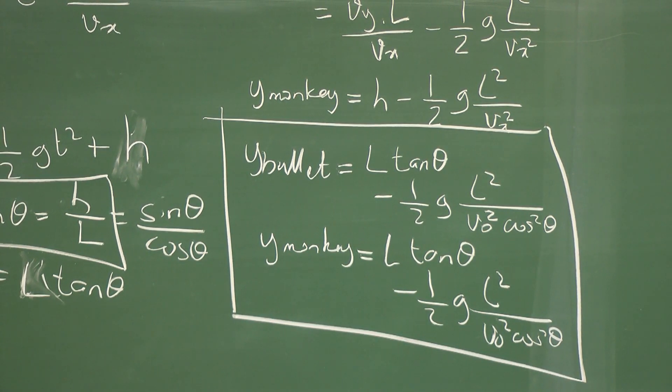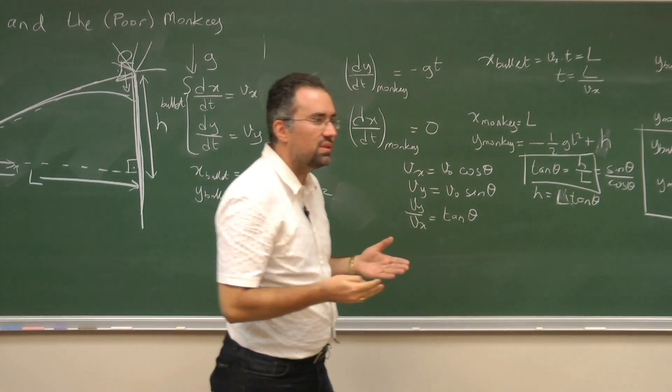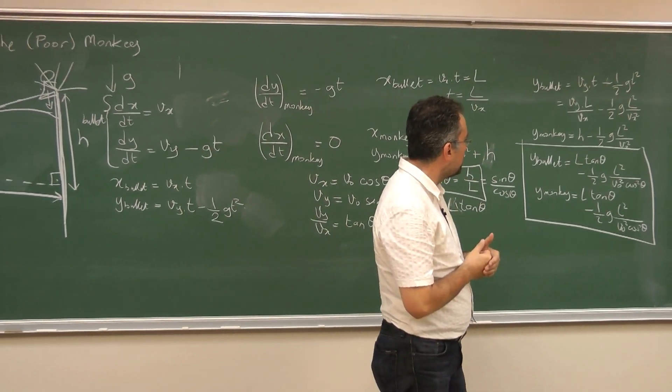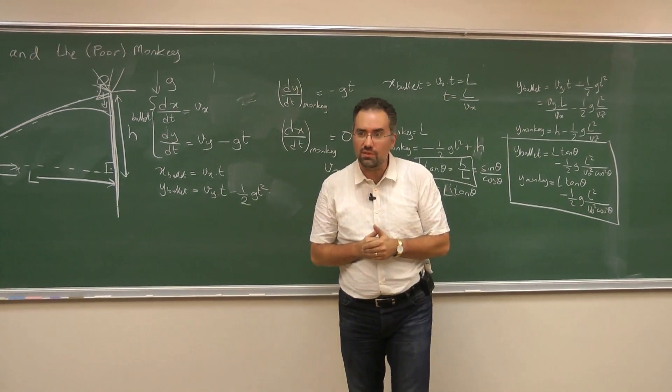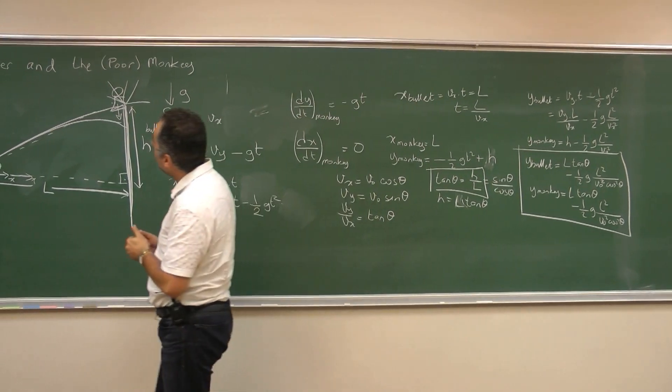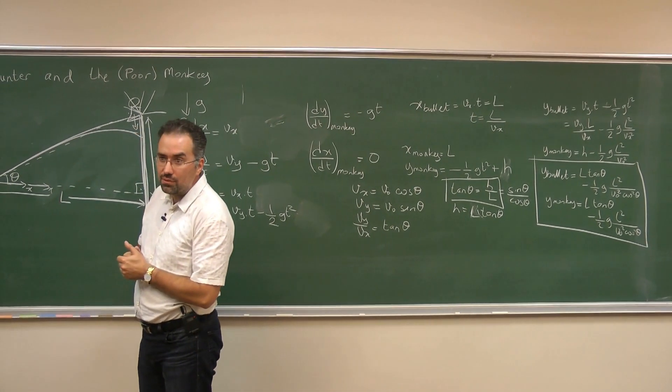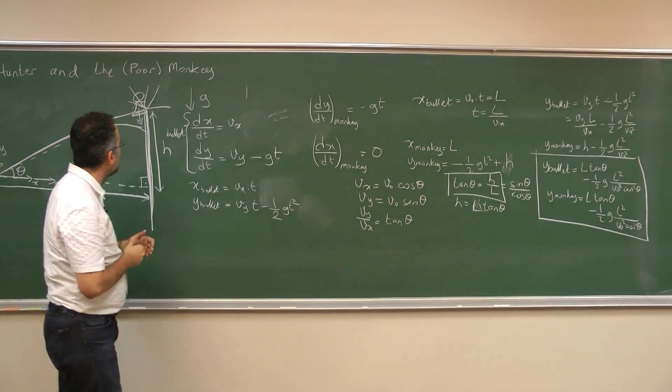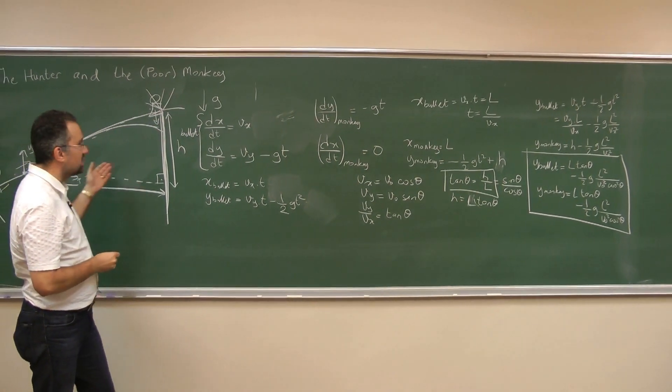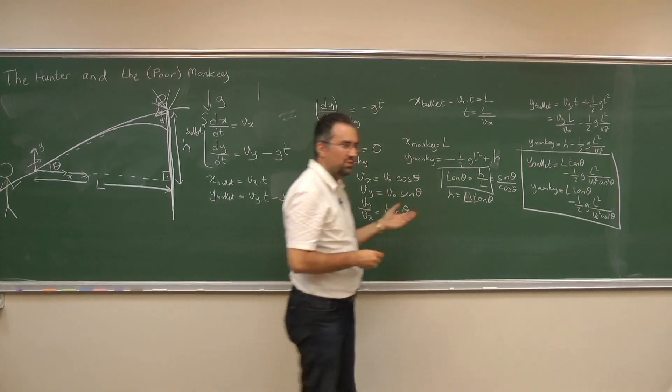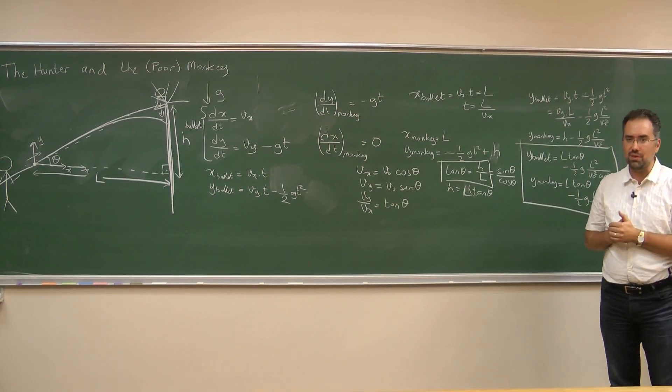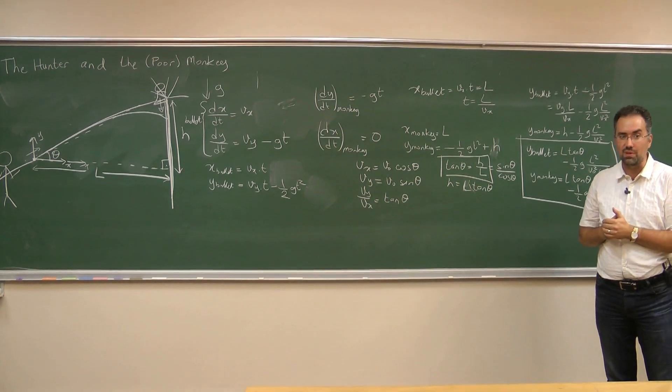Now and it's independent of the bullet's initial velocity. The only condition for the monkey to be shot is that the hunter aimed directly at the monkey to start with. And the other condition is of course that, well, the bullet does reach the tree without hitting the ground first. Otherwise, in any case, the poor monkey gets perfectly shot.